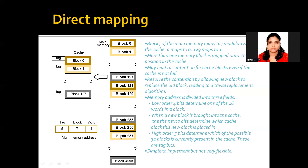If I take a third example with block 4095, again if the answer is 127, I have to go for page replacement. Even though other blocks are free, whatever answer you get, that particular block must map to that block number. In that case we have to go for page replacement. This is the drawback of direct mapping.